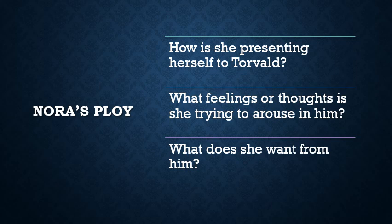In this ploy — this dance she uses to distract Torvald from the letter — how is she presenting herself to him? What side of herself is she showing, and what feelings is she trying to arouse in him? What does she want from him beyond teaching her how to dance? How might this help her, or what might she be trying to set up with Torvald for when he eventually opens the letter and finds out the truth? Just some questions to consider.